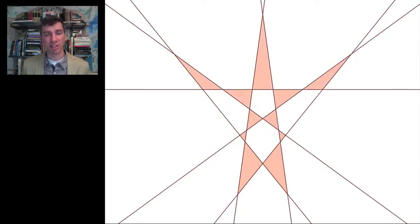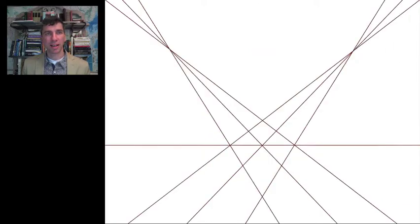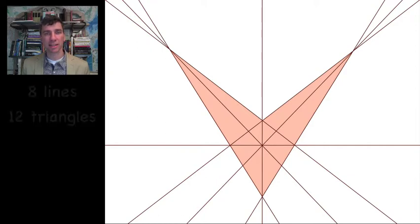So here it is for seven. This is the best possible result. These results are known to be the best possible that we've seen so far. Okay, that's seven and this is my best that I could do for eight and I got twelve triangles there.